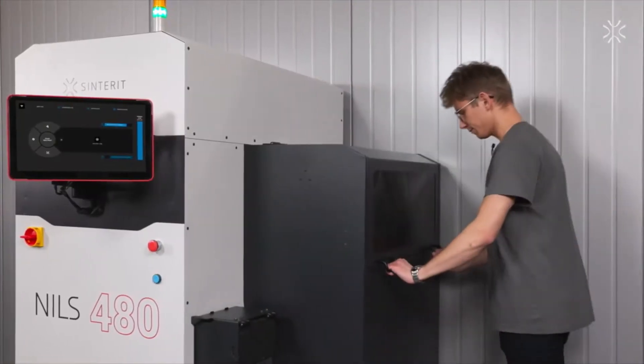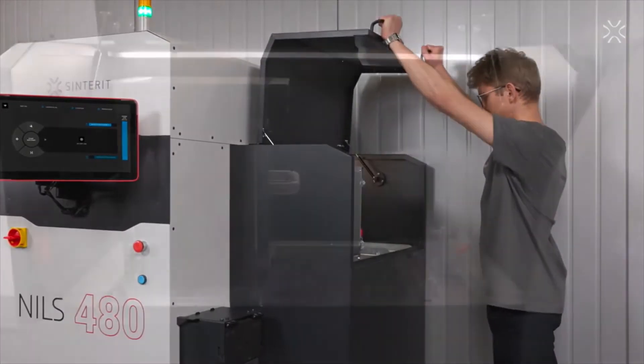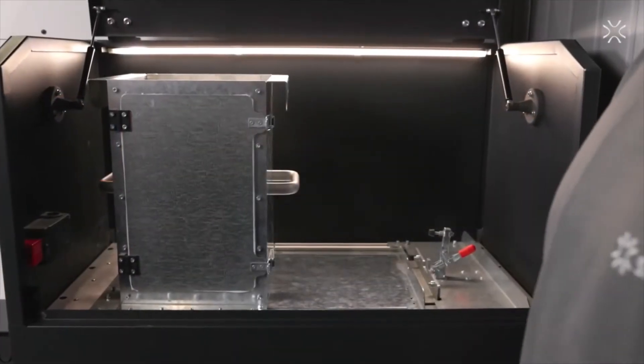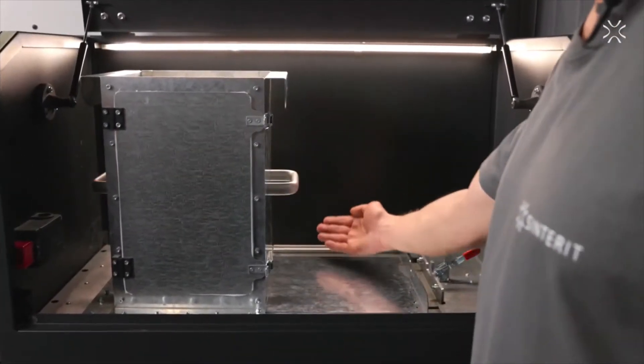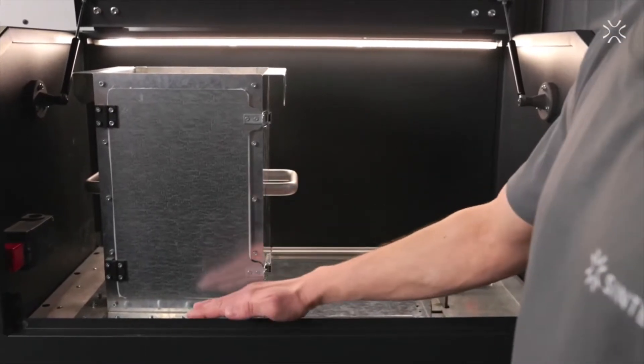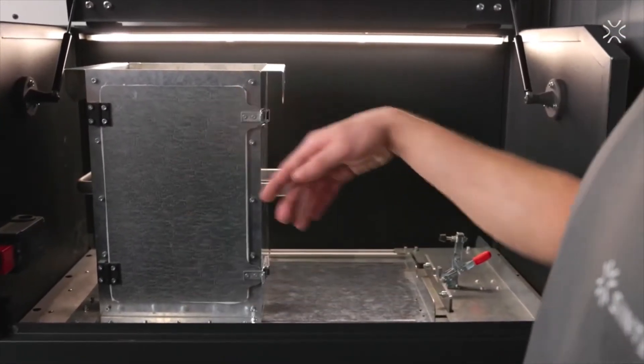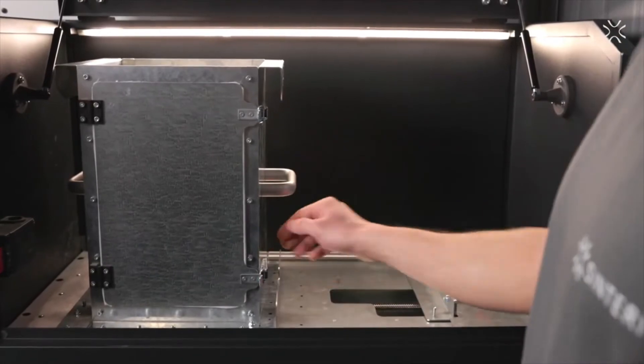Now let's take a look inside the cooling chamber. Here is the cooling box. When the printing process is complete, the fusion bed automatically moves here and ejects the print cake up. The plate mechanism will separate the print cake.